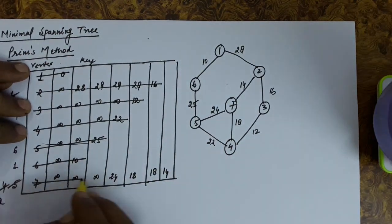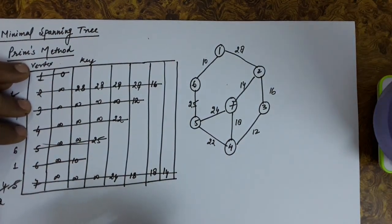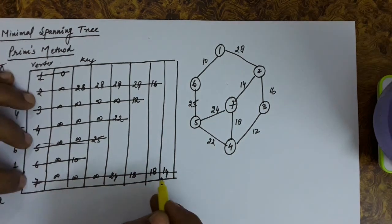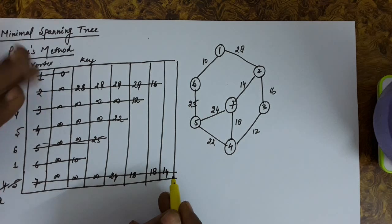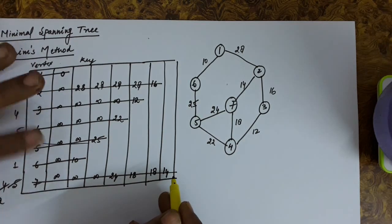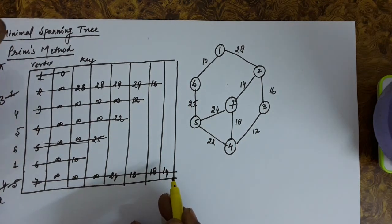Now we delete vertex 7, which is the only vertex remaining in the queue. Since there is no other element in the queue, there will be no further operation. The queue has become empty and the work is done.